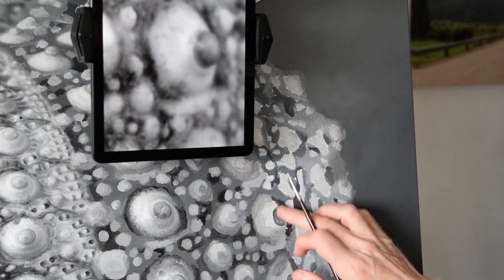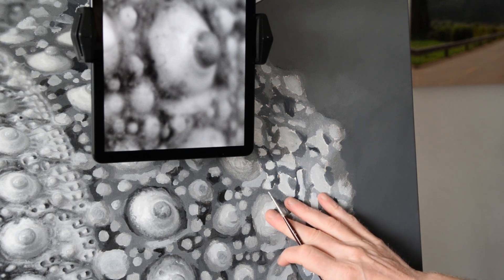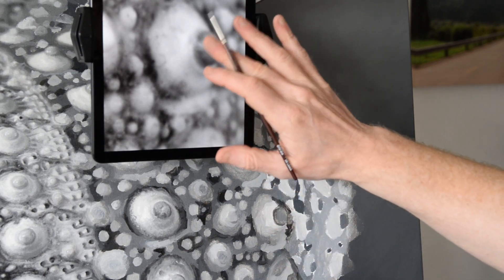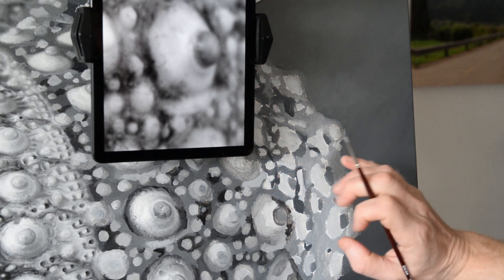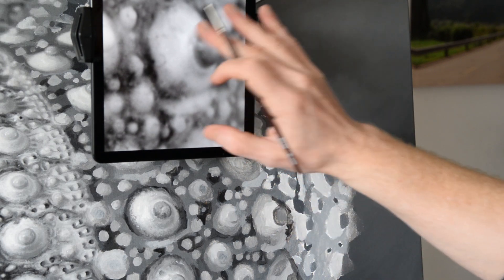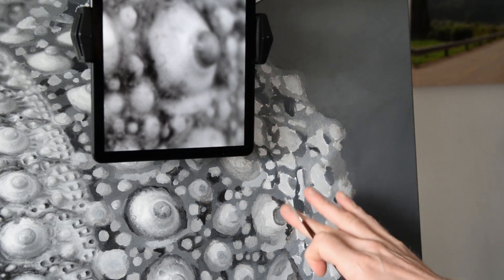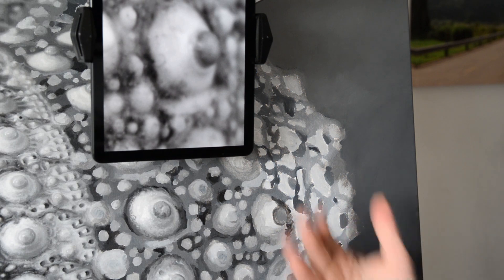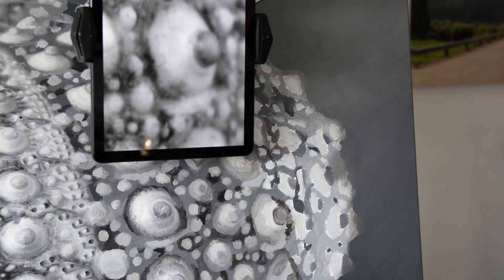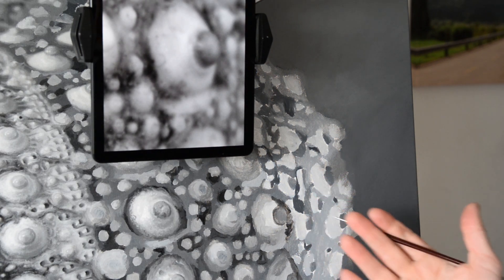So here we are, we're going to paint this bump on the urchin here. I've got my reference here. And so what I'm going to do is I'm just going to use the reference here to paint this urchin. And I'll probably just speed through the process a little bit, and then talk about it afterwards.